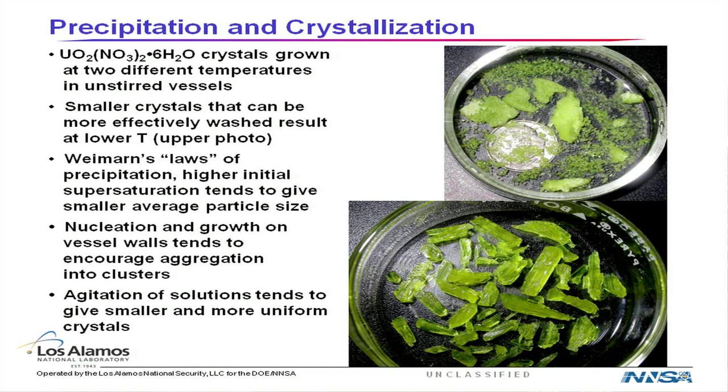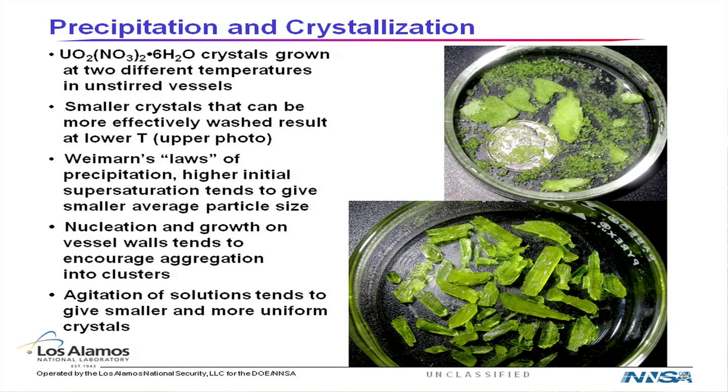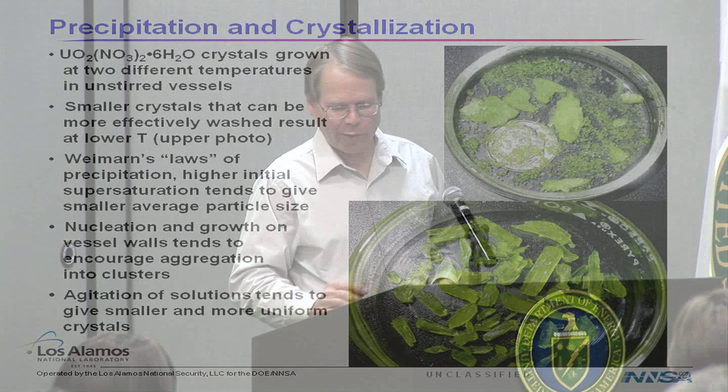Different conditions can give you much smaller, purer crystals that are easier to wash. There's a series of rules of thumb called Weimarn's Laws of Precipitation. A higher initial supersaturation tends to give smaller average crystal size — which can be good in some cases, but with iron hydroxide you can get very small crystals that agglomerate into a mud-like material that's very difficult to wash and collect. Nucleation and growth on vessel walls tends to encourage aggregation, so you want to agitate your solutions to give smaller and more uniform crystals.